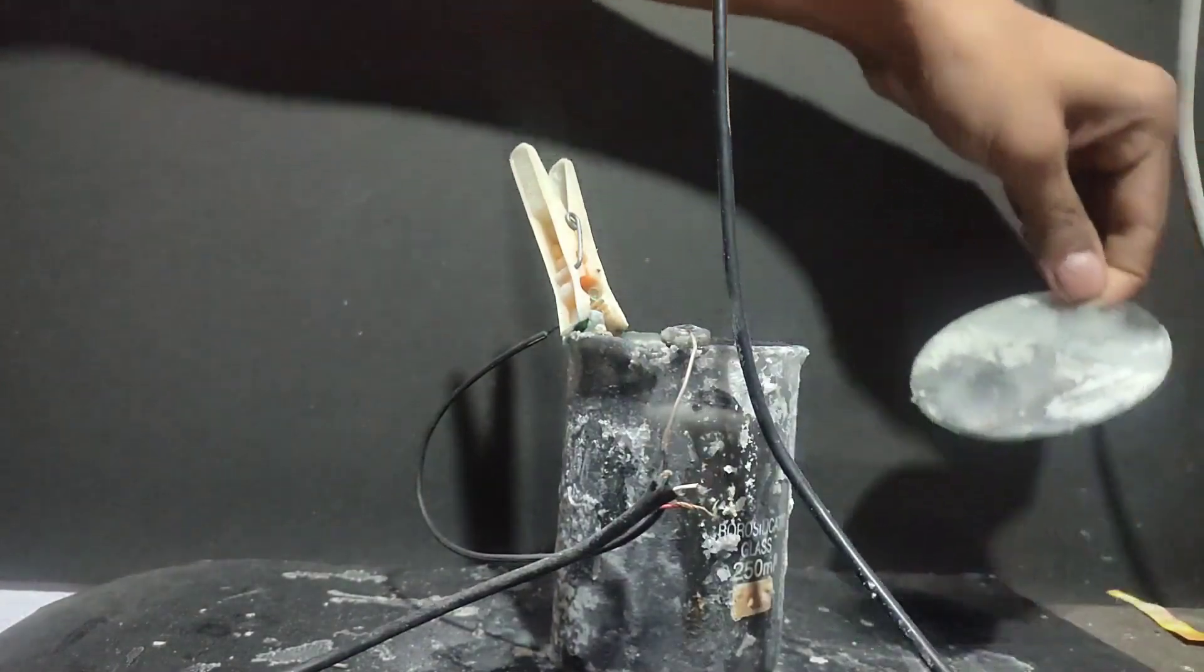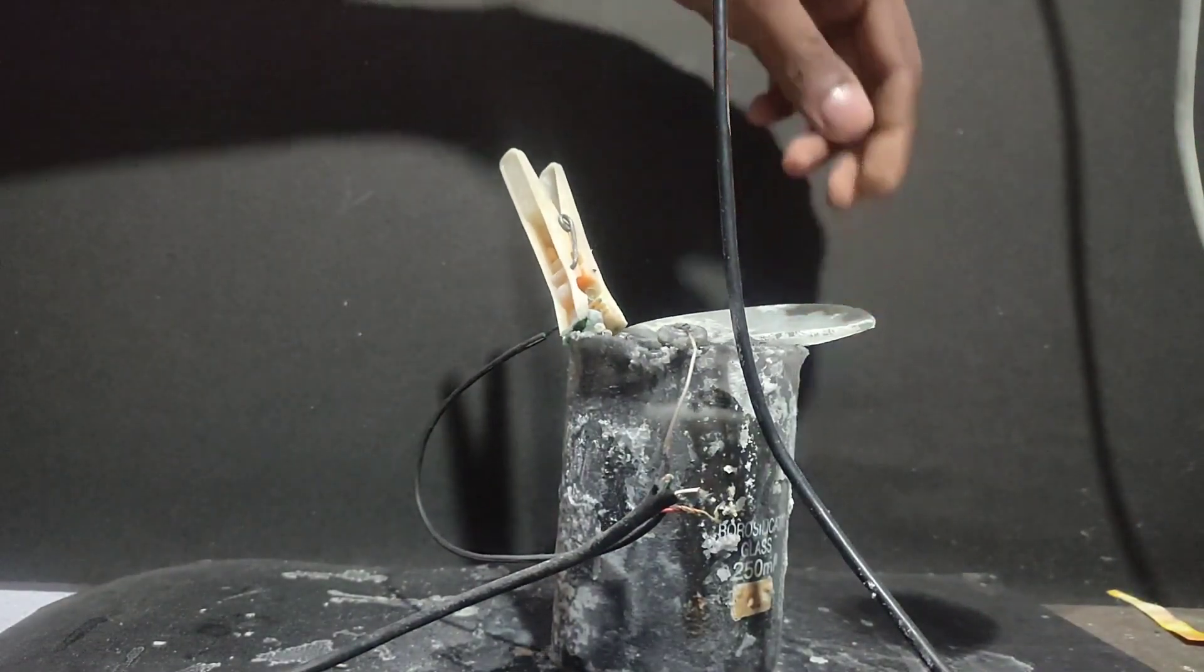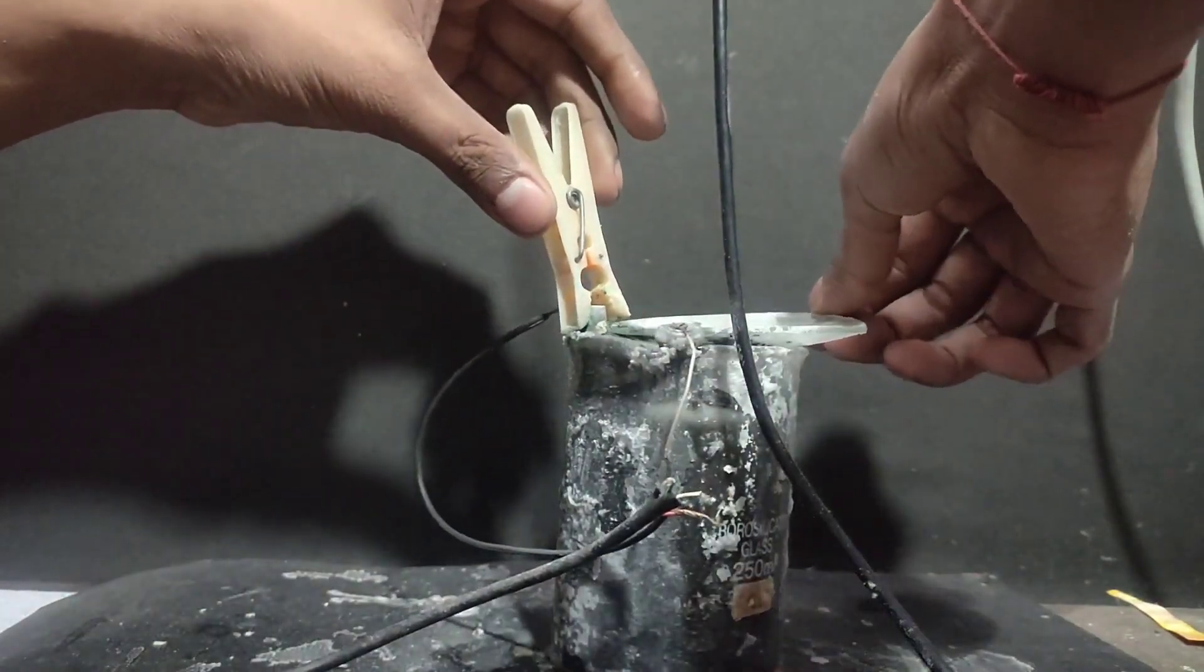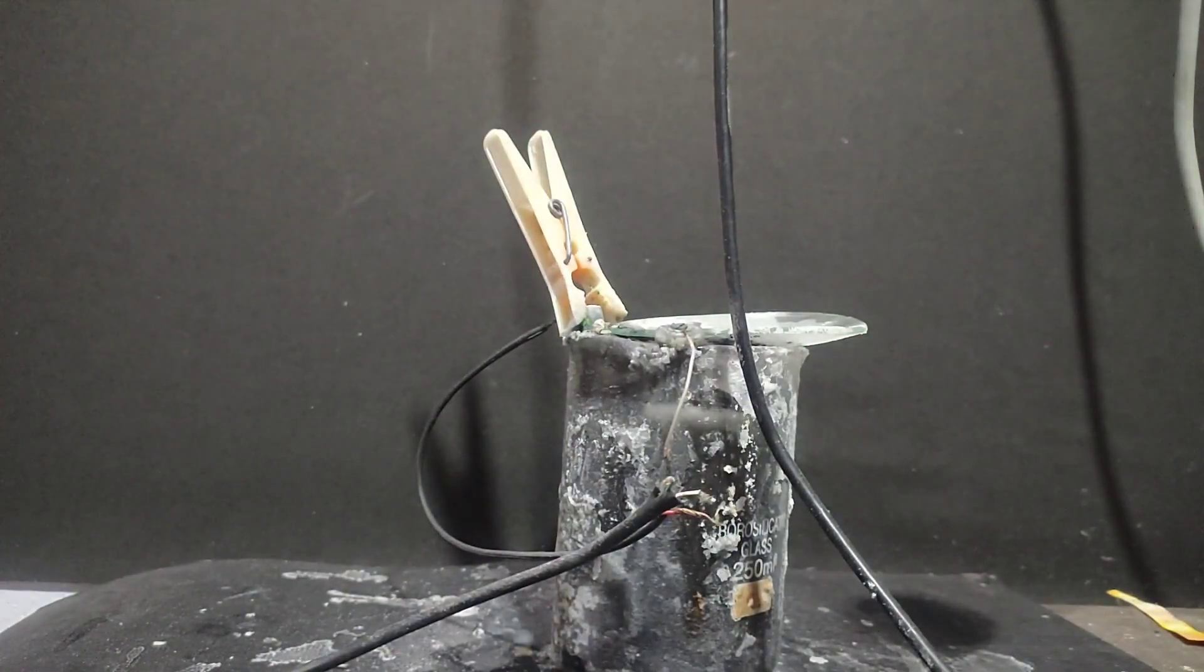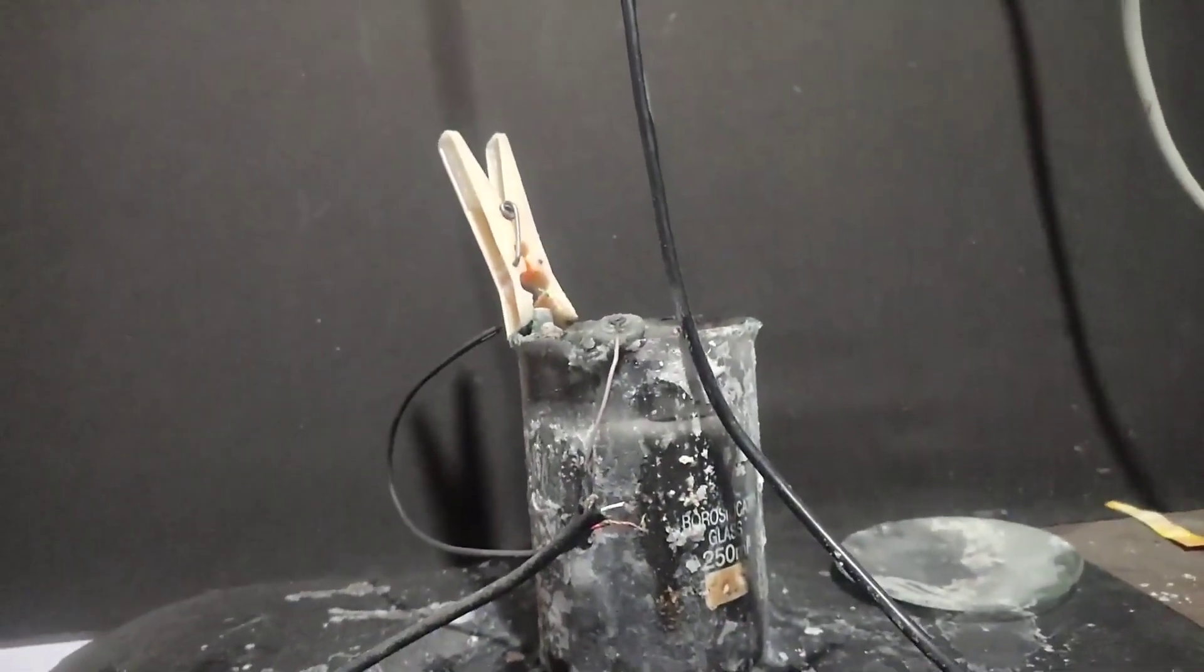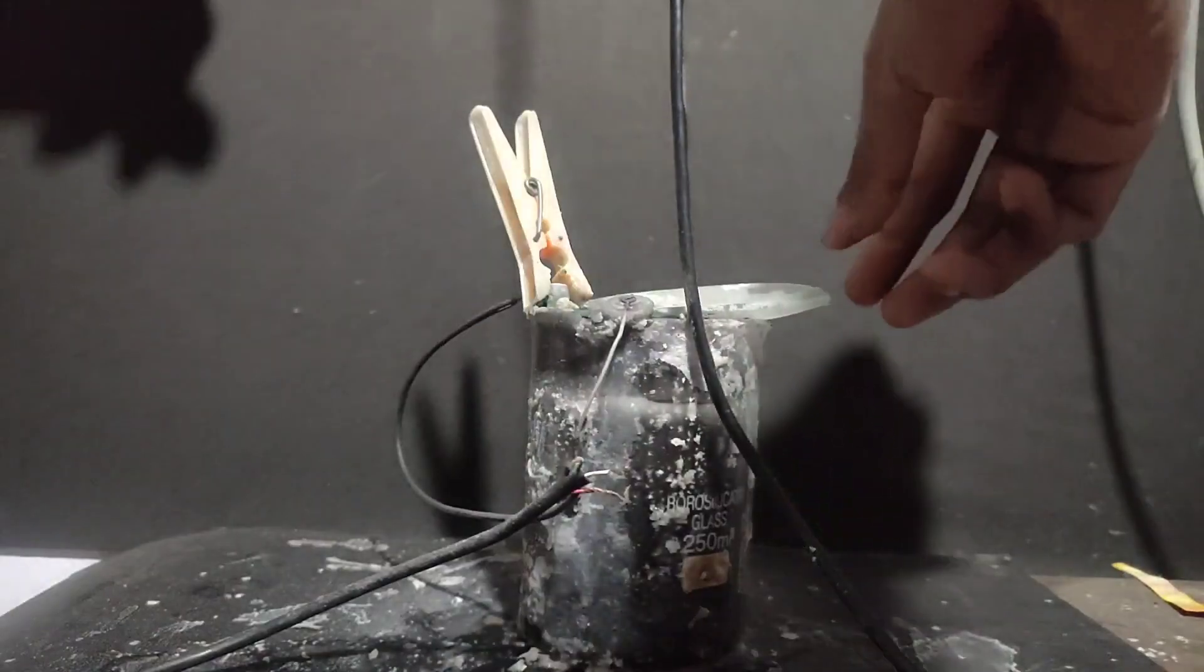I let this electrolysis run for 10 days and kept adding potassium chloride solution to keep the supply of potassium chloride from time to time. The anode was getting disintegrated and the solution was getting black.